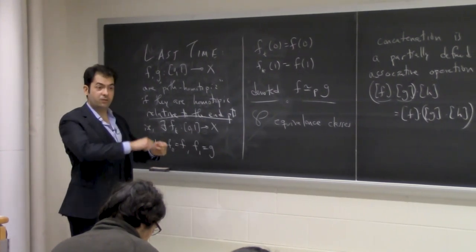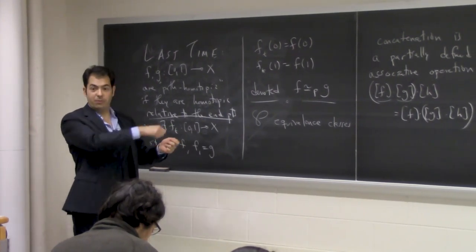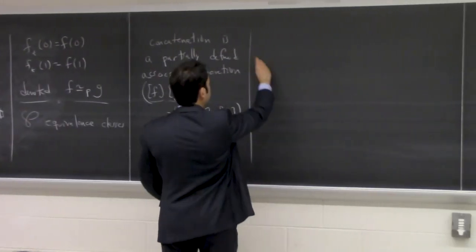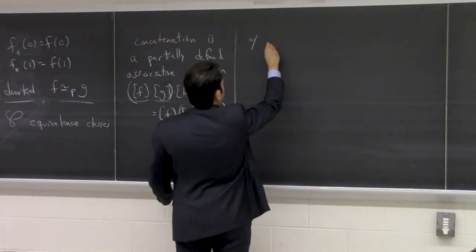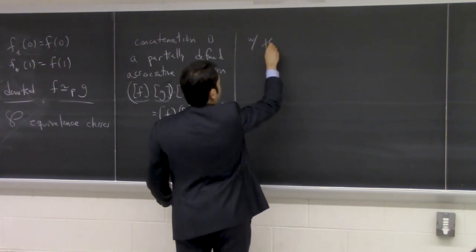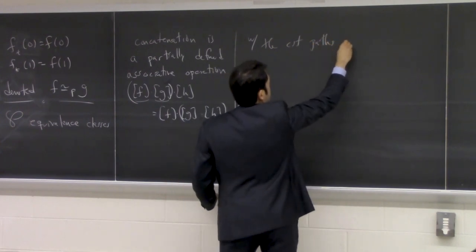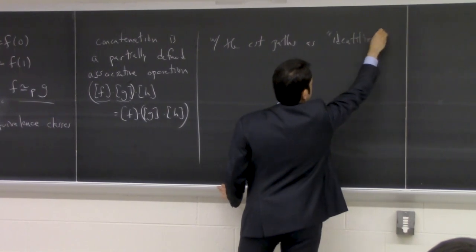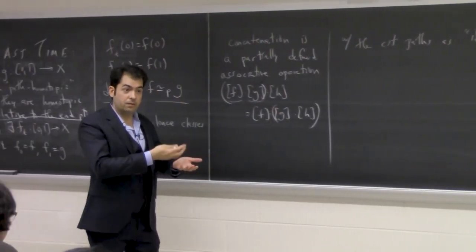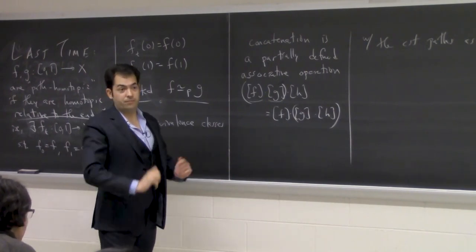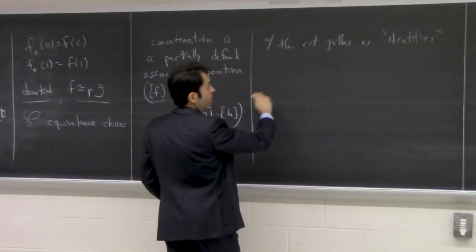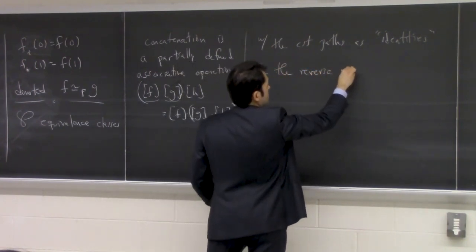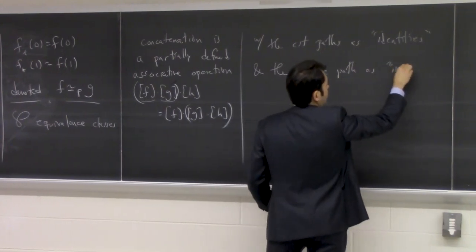So it's partially defined in that sense, but it does have identities — plural — with the constant path, because the constant path can only be composed with something that ends there or begins there. And we mean the homotopy class of the constant path. And the reverse path serves as an inverse.